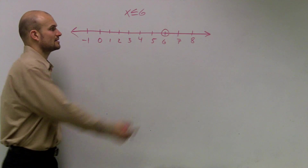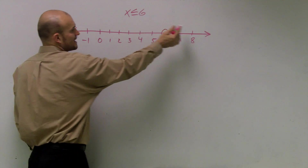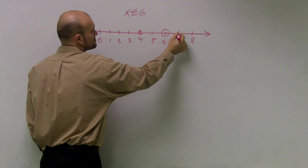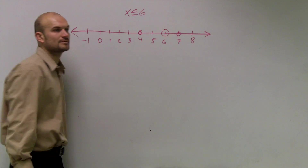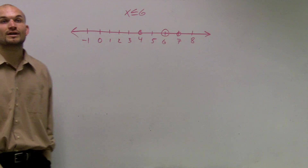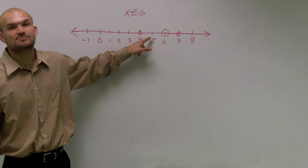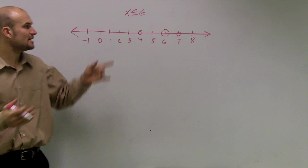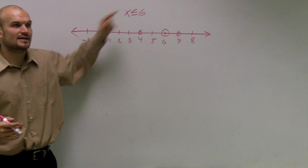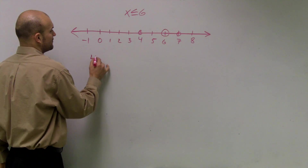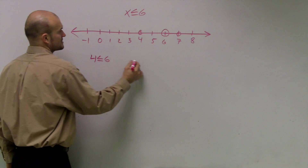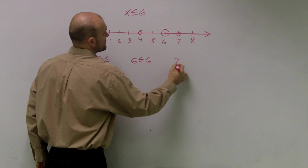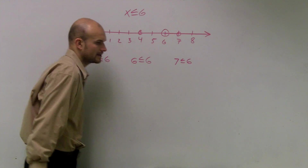Then what we're going to do is pick a point to the left and a point to the right. You can just pick nice little smaller dots — any point, as long as one is to the left and one is to the right. So now we're going to plug in those points into our inequality. So I'll say 4 less than or equal to 6, 6 less than or equal to 6, and 7 less than or equal to 6.